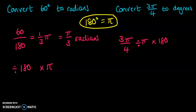And then multiply by 180. So we want 3/4 of 180, which is 135°. So for that one, we divide by π times by 180.